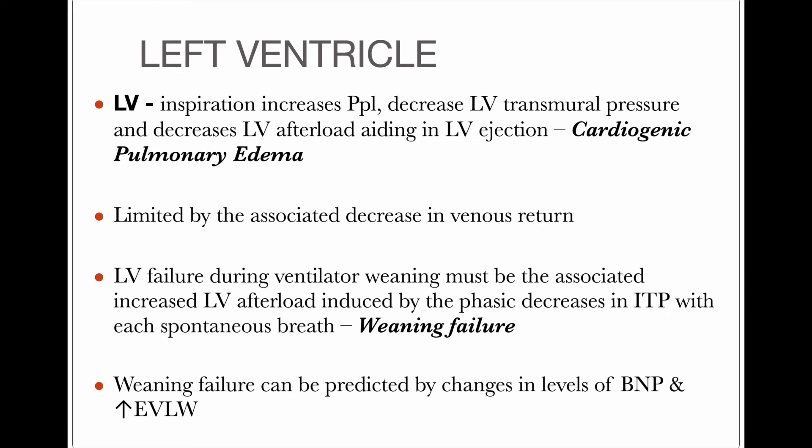Now regarding left ventricular failure during ventilator weaning: during weaning, the patient is gradually transitioning from positive pressure ventilation to spontaneous negative pressure breathing. This is associated with decreased LV transmural pressure and decreased LV afterload during positive pressure, aiding LV ejection. During weaning, increased LV afterload is induced by phasic decreases in intrathoracic pressure with each spontaneous breath. With phasic decreases in ITP, more blood gets in, and increased LV afterload means blood finds it difficult to leave the heart — leading to left ventricular failure during weaning. Weaning failure can be predicted by changes in proBNP levels and increased extravascular lung water.